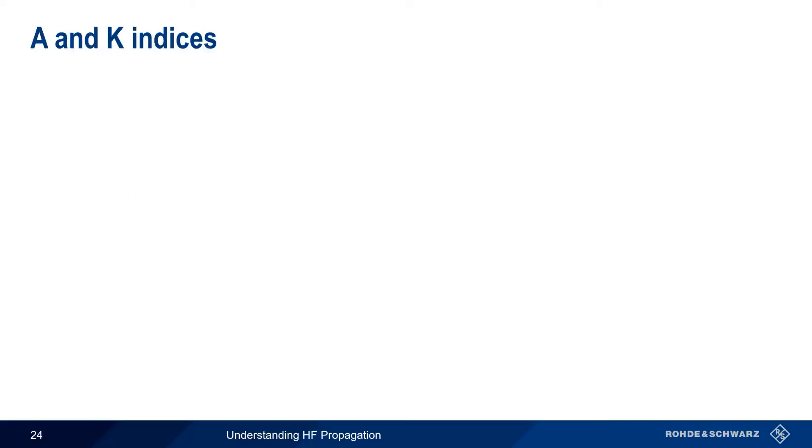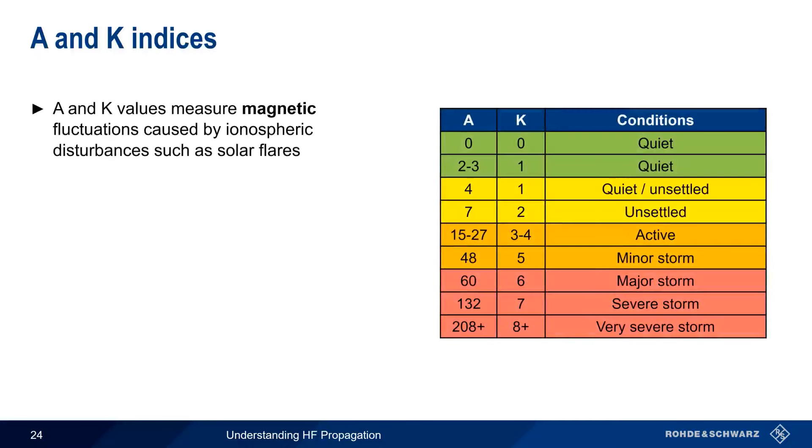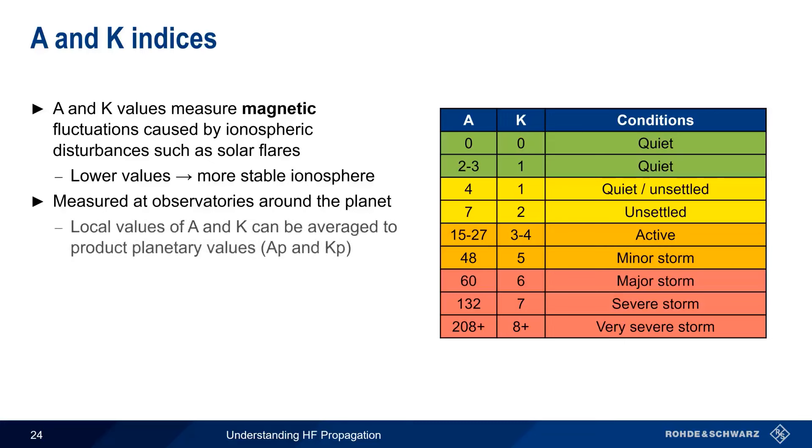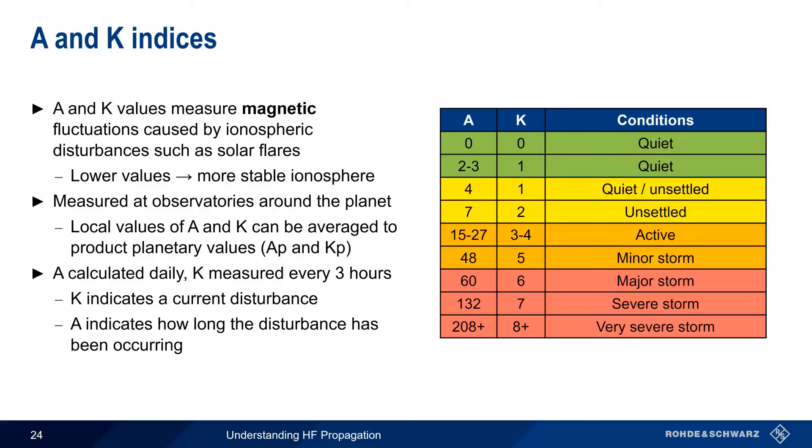Sunspot number and solar flux index can be used to quantify ionospheric conditions, but to quantify geomagnetic conditions, we use A and K indices. In general, lower values for A and K mean a more stable ionosphere, although, as we just mentioned, in some cases a geomagnetic storm may not lead to an ionospheric storm. A and K are measured at observatories around the planet, and these local values can be averaged to produce planetary values. One of the biggest differences between these two indices is that A is calculated daily, whereas K is measured every three hours. Higher values of K indicate a current or ongoing geomagnetic event, whereas A is useful in knowing how long this disturbance has been occurring.